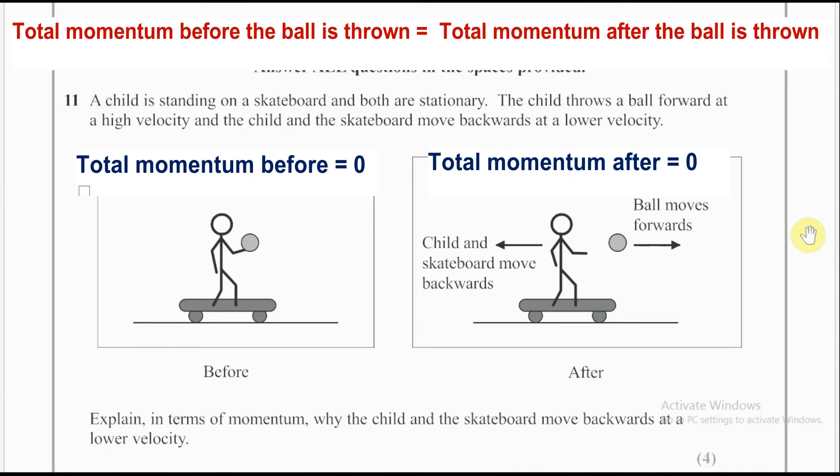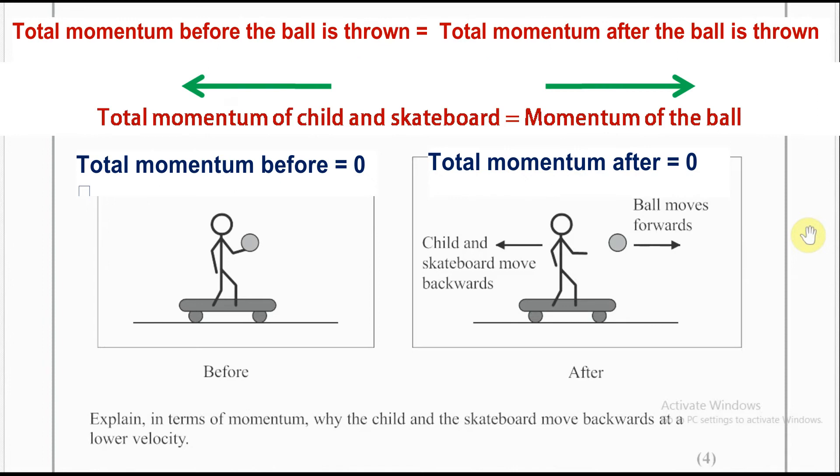For this to occur, total momentum of the child and the skateboard should be equal and opposite in direction to the momentum of the ball.